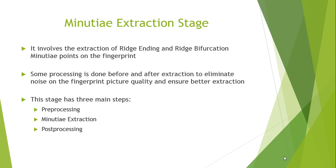After obtaining the fingerprint, we proceed to the second stage that involves the extraction of minutiae points, namely the ridge ending and the ridge bifurcation. Since noise is present on the input fingerprint image, it is recommended that a fingerprint undergoes a series of pre-processing steps to clarify the image more before being fed to the extractor. After successful minutiae extraction, post-processing is done to significantly get rid of any remaining noise. Accordingly, this stage has three main steps: pre-processing, extraction, and post-processing.